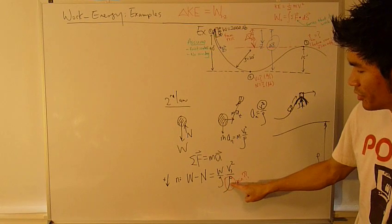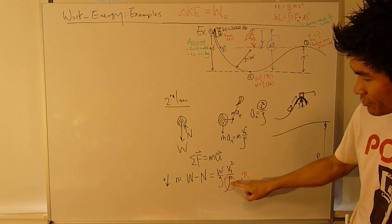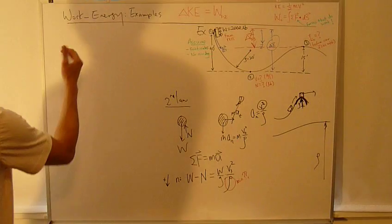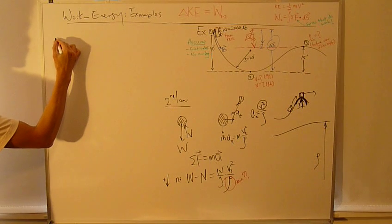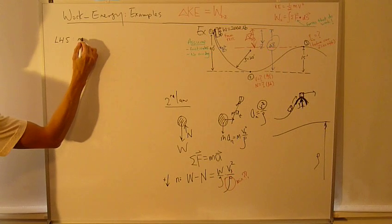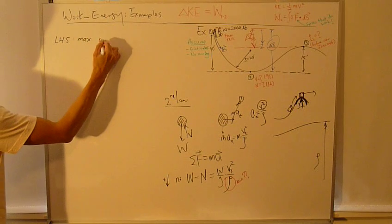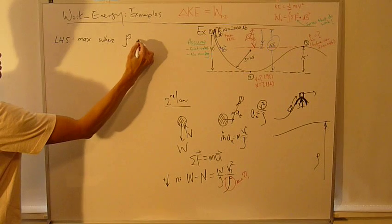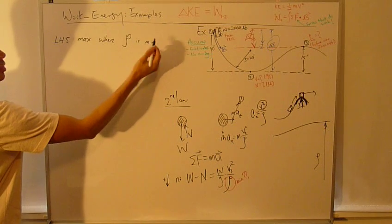When row is minimum, left hand side becomes maximum. Left hand side is maximum when row is minimum.